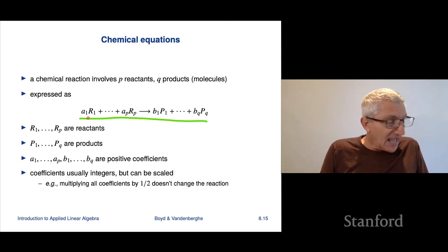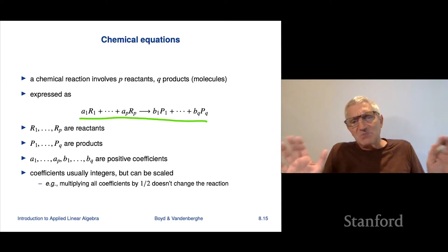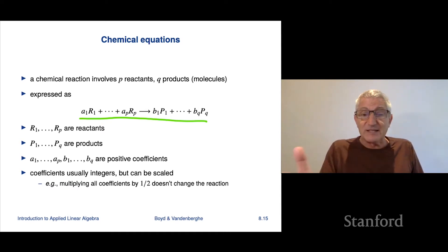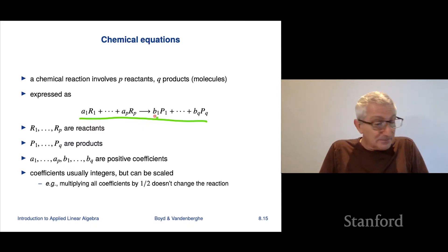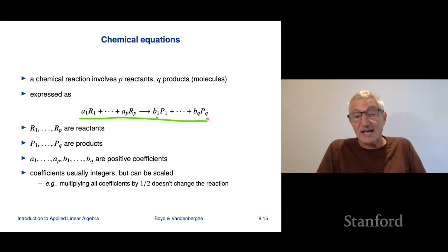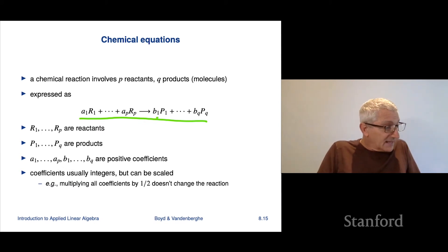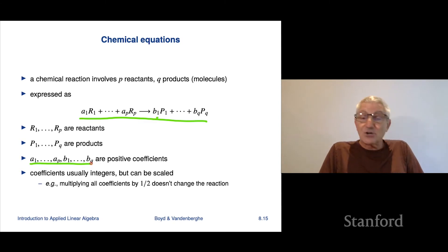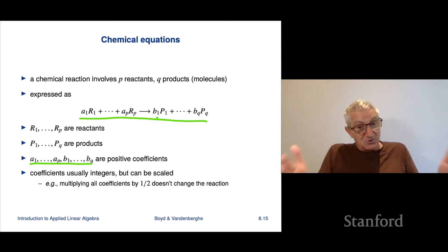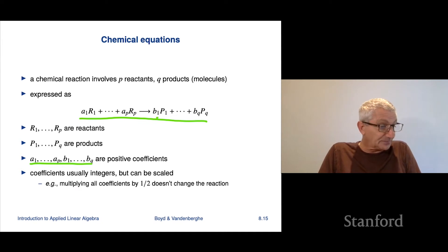The A's and B's are positive coefficients, generally integers. The reaction is the same if you multiply all coefficients by any positive number — so multiplying by one-half describes the same chemical equation. Let's look at a very simple example: electrolysis of water. The chemical equation says that on the left there is one reactant, water H2O, which consists of two hydrogen atoms and one oxygen atom. You don't need to know chemistry — this is just an example of a set of linear equations.